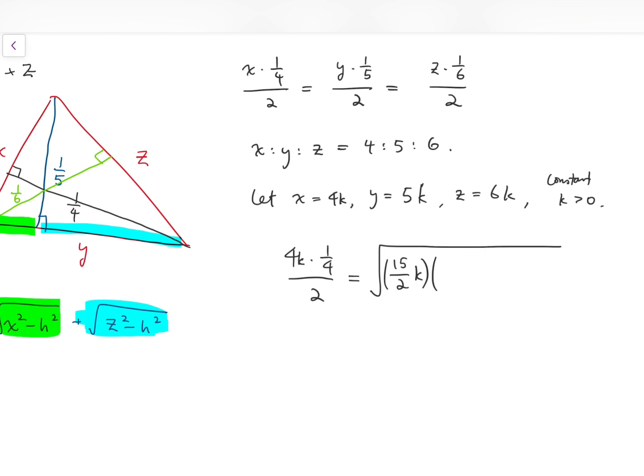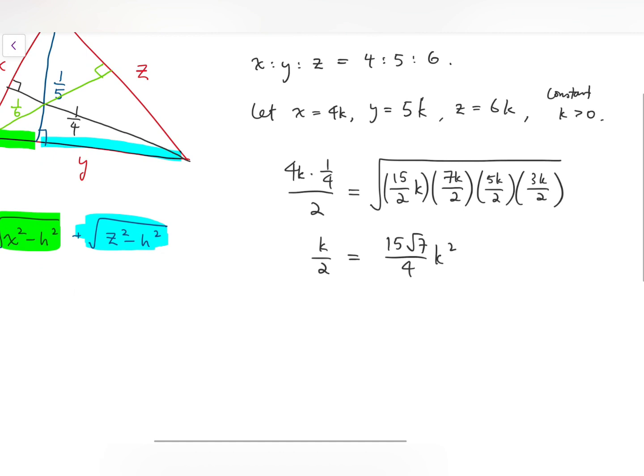Now subtracting this by 4k, 5k, 6k, we do this one by one and multiply them all together. We'll have 7k over 2 when we minus x, we have 5k over 2 when minus y, and 3k over 2 when minus z. So then simplifying, k over 2 equals 15 root 7 over 4 times k squared. We know that k is a positive constant, so we can just cancel out 1k on both sides. So that means k equals 2 over 15 times root 7.